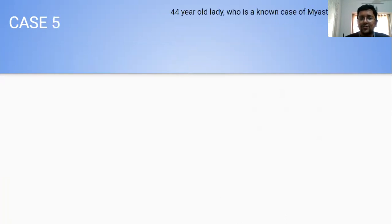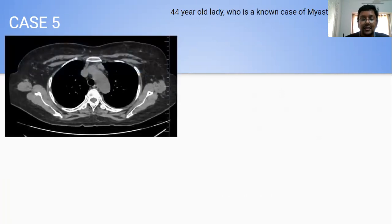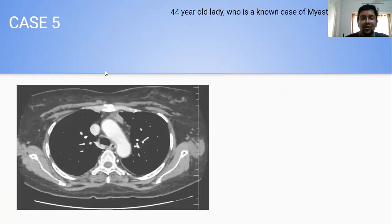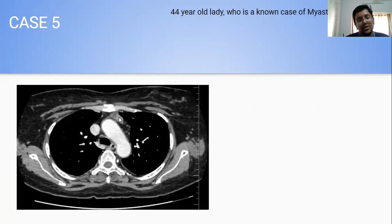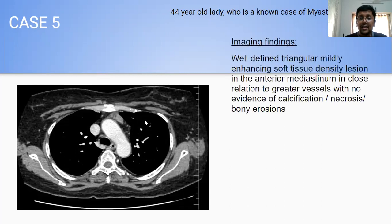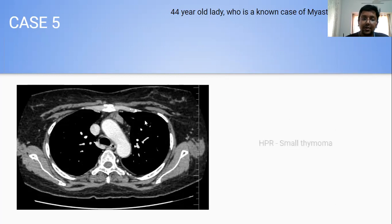My fifth case was a 44-year-old lady who was a known case of myasthenia gravis — which, as we know, has great correlation with thymoma. Plain CT revealed a well-defined, mildly lobulated soft tissue density lesion involving the anterior mediastinum, small in size and mostly towards the left side. Near-homogeneous enhancement was noted on post-contrast images, with no evidence of infiltration of adjacent vasculature and no bony erosions. This turned out to be a small thymoma.